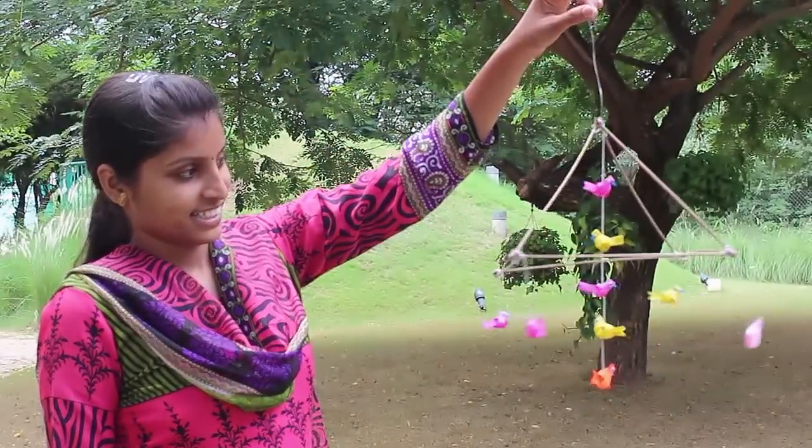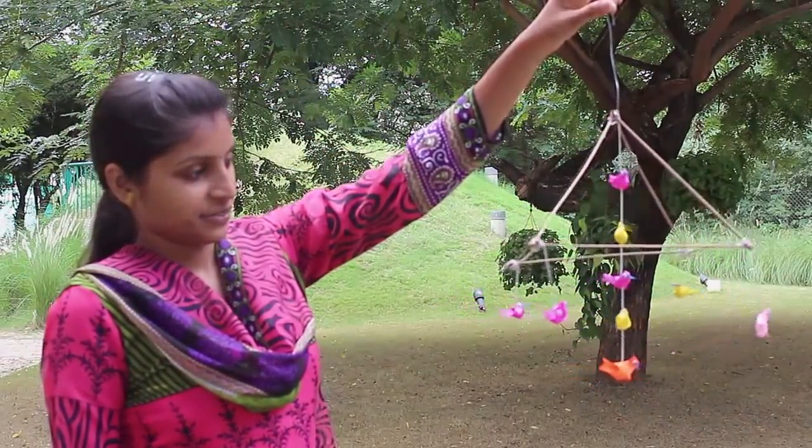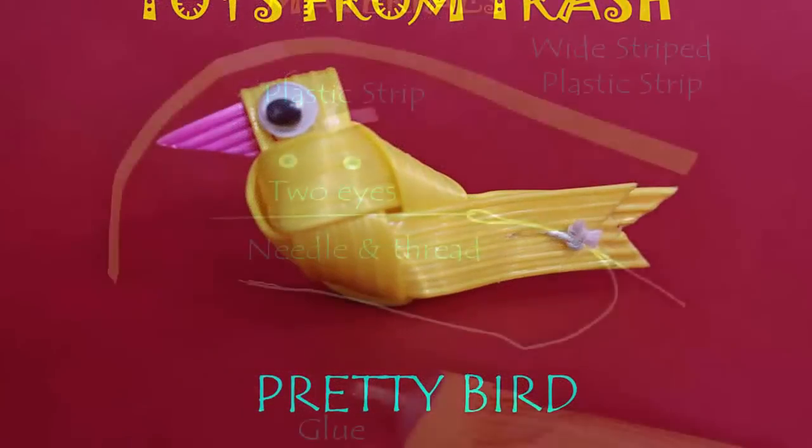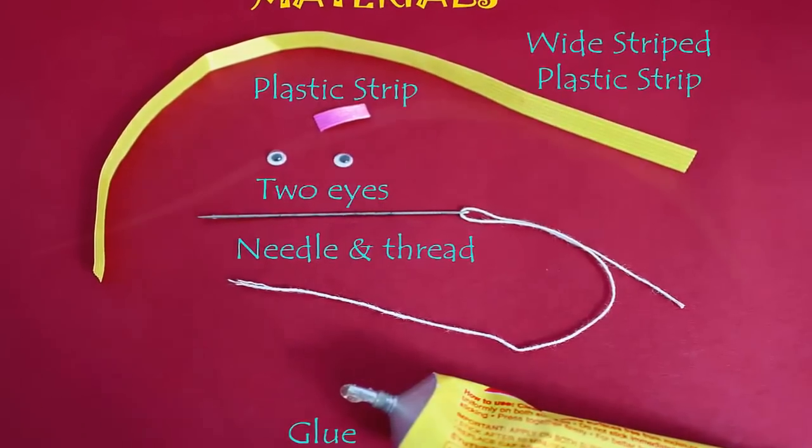Well here is a very nice mobile made of birds made from plastic tape. These are all-weather birds you can hang out in the rain and sunshine. To make this bird you require plastic tape which is a centimeter wide.